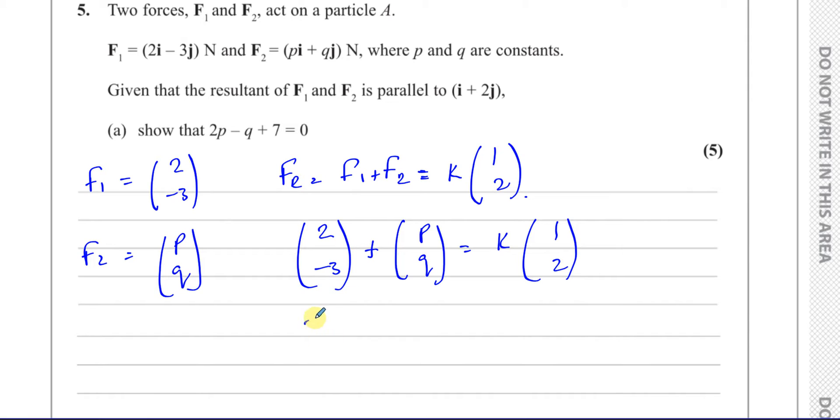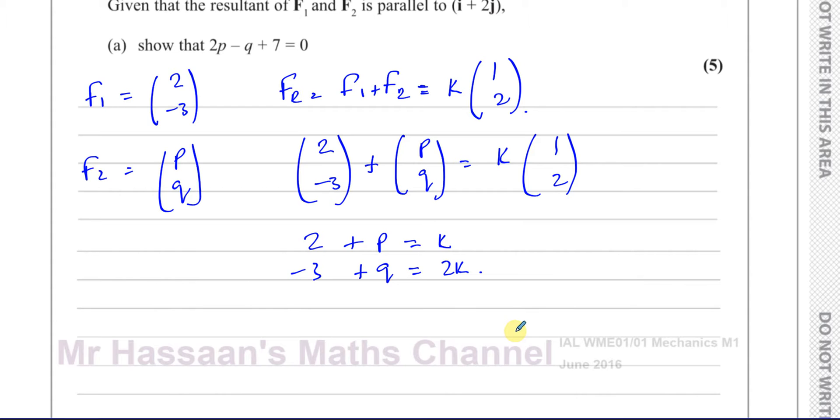So we have 2 plus P equals K, and minus 3 plus Q equals 2K. Now what we want to do is eliminate the K from this. I'm going to take equation 1 and multiply it by 2, so it becomes 2K as well. If I take this and multiply it by 2, it becomes 4 plus 2P equals 2K.